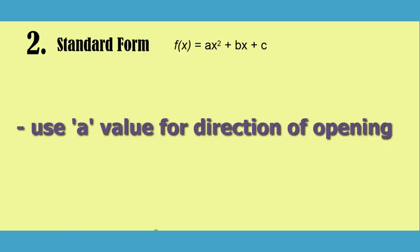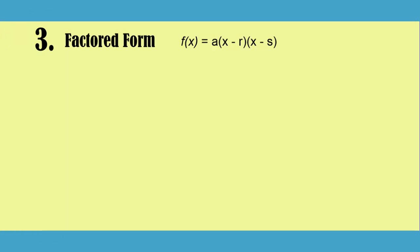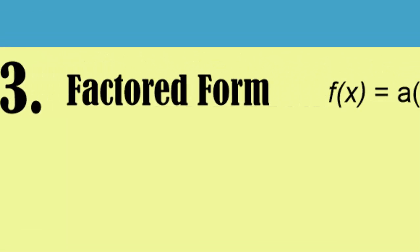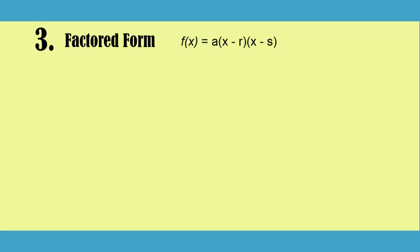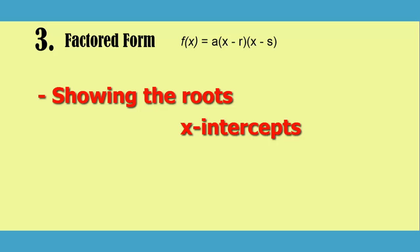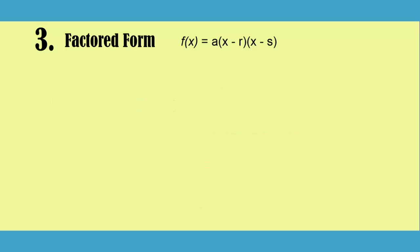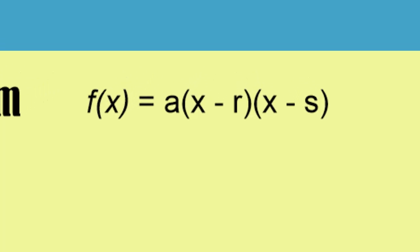Let's move to the final form. Our last form is factored form: f(x) equals a(x - r)(x - s). This form is useful for giving us our roots, or in other words, our x-intercepts, or the solutions, or the zeros. We find the roots by looking at the r and the s values in the brackets. It's sort of like backwards thinking.